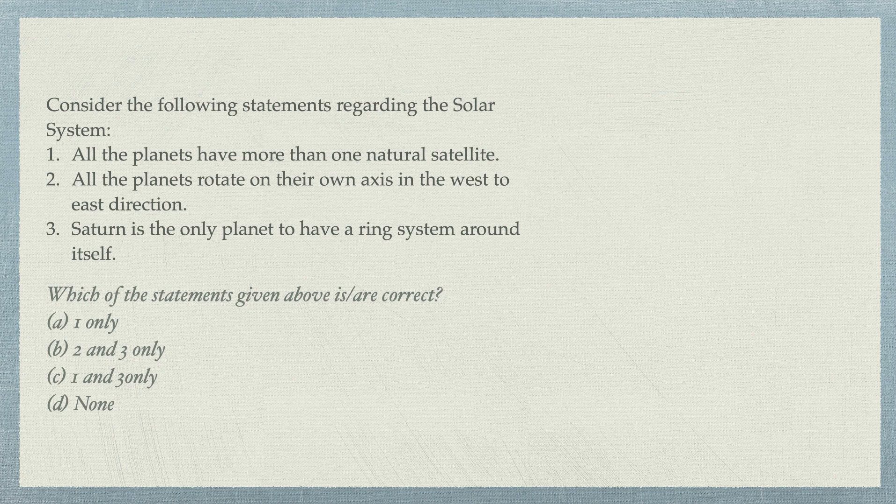Another question: Consider the following statements regarding the solar system. Statement one: all planets have more than one natural satellite. Statement two: all planets rotate on their own axis in the west to east direction. Statement three: Saturn is the only planet to have a ring system around itself. Let's attempt this — pause the video and think. Space is a topic that all students find exciting.